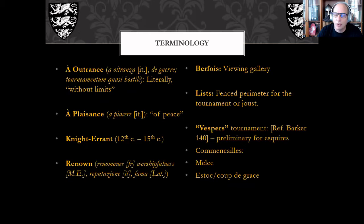À plaisance is the opposite — it means 'in peace.' That's where you'd find rebated weapons and coronels on lances instead of sharp points. In outrance you have sharp points, sharp swords, et cetera. Early tournaments were fought sometimes outrance — à outrance in the Italian. They'll sometimes declare how they intend to meet.